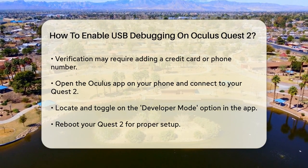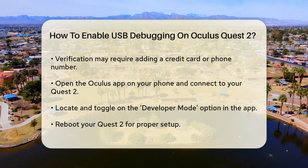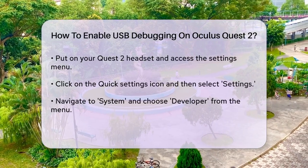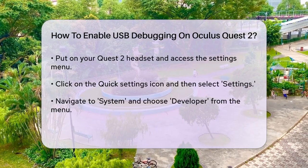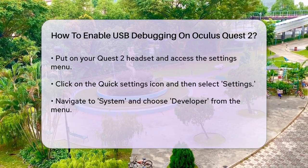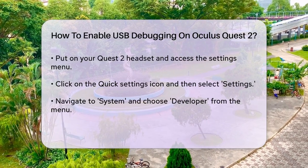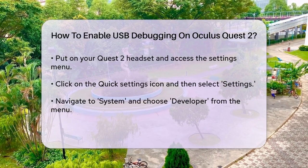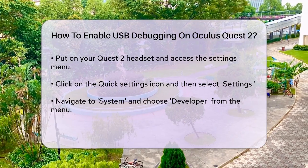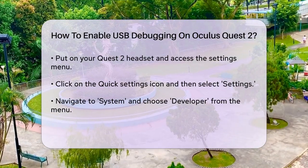Next, put on your Quest 2 headset and navigate to the Settings. Click on the Quick Settings icon on the far left side of the menu bar, then select Settings in the top right corner. Go to System in the top left corner and select Developer from the left-sided menu. Here, you'll find the USB connection dialog option. Click the toggle switch next to it so it turns blue. This will allow your headset to communicate with your computer via a USB connection.